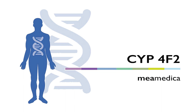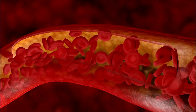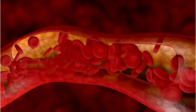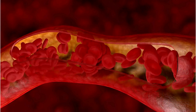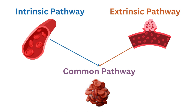The coagulation cascade is a series of biochemical reactions that occur in the body to stop bleeding by forming blood clots. It involves a complex interplay of various proteins known as clotting factors. The cascade is typically divided into two pathways, the intrinsic pathway and the extrinsic pathway, which converge at a common pathway to ultimately form a stable blood clot.